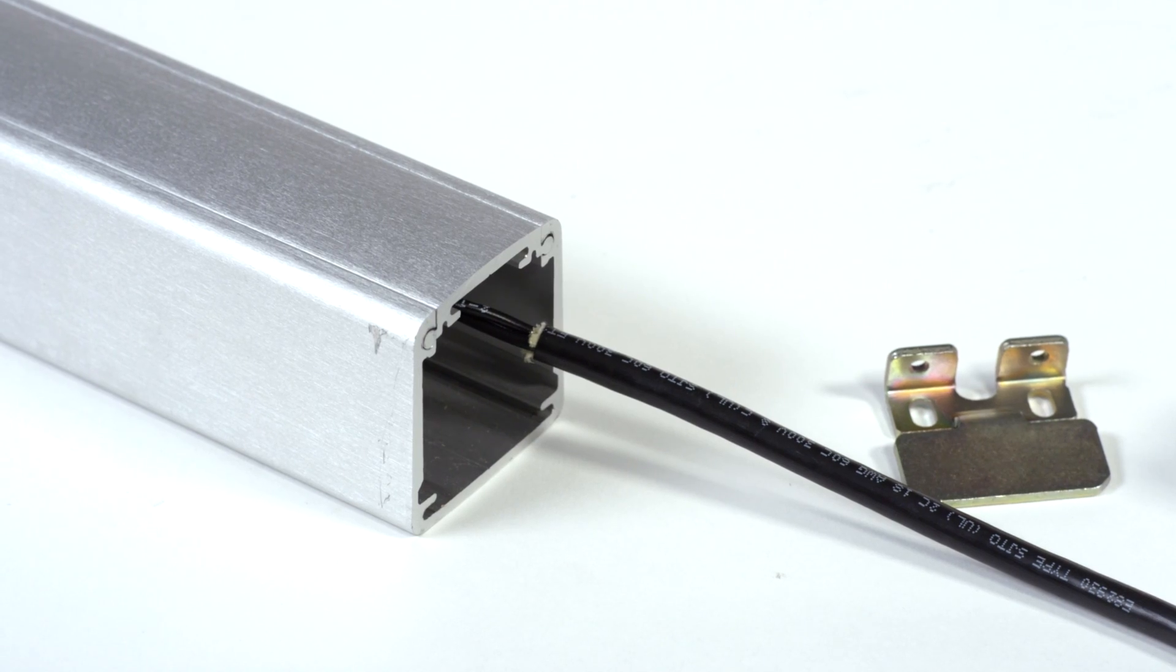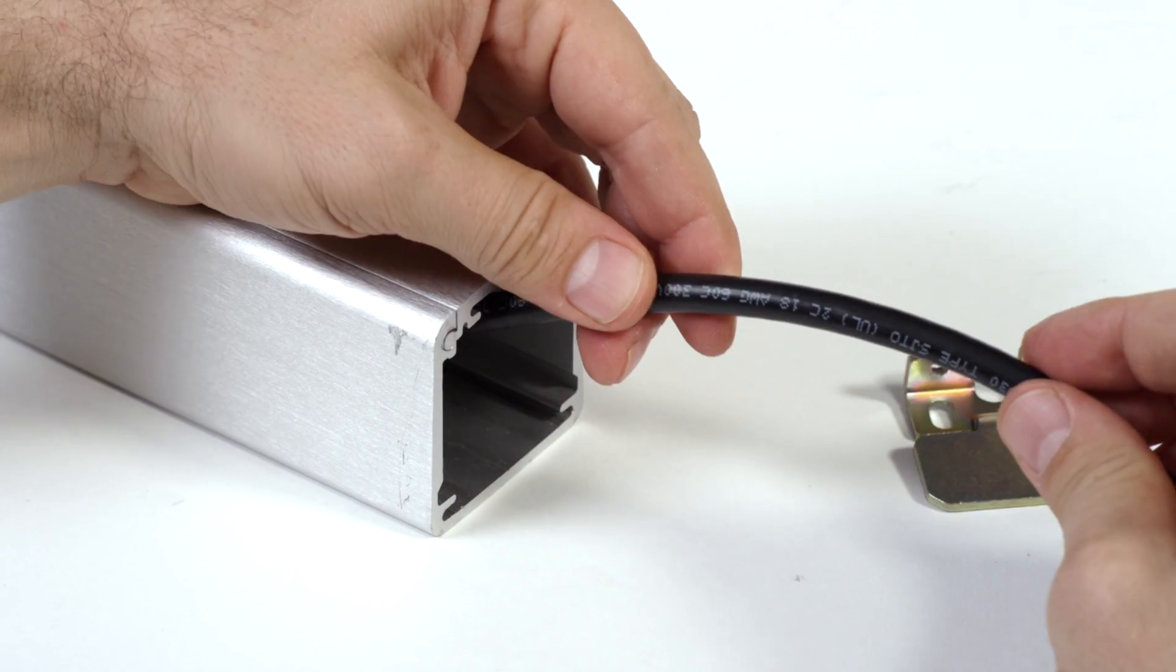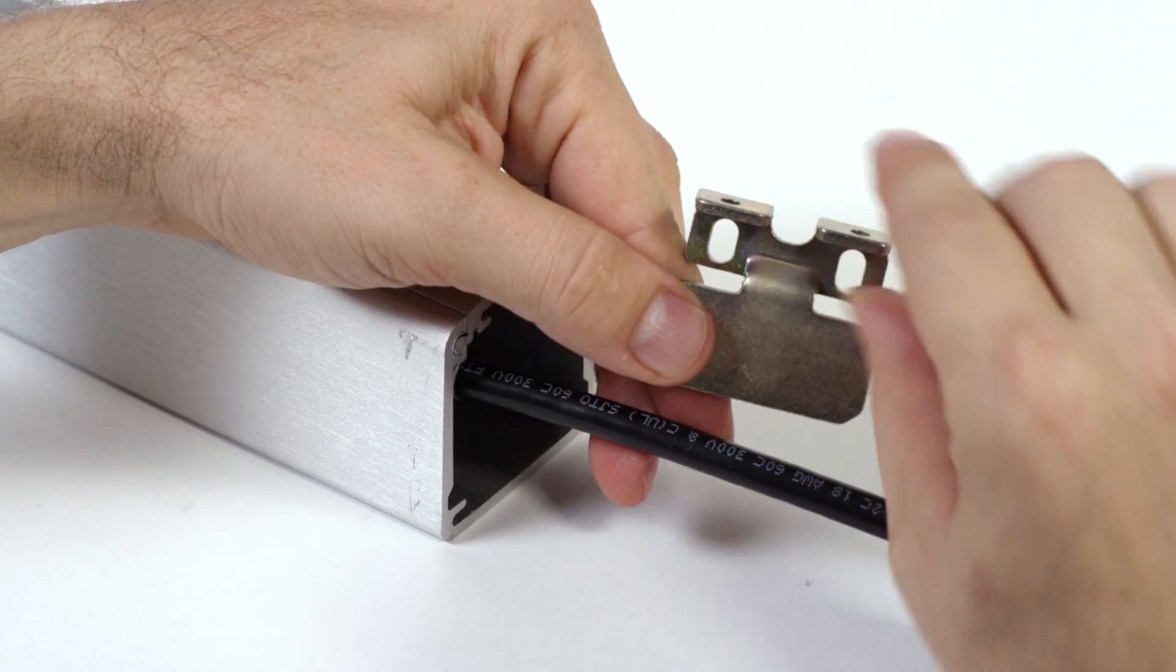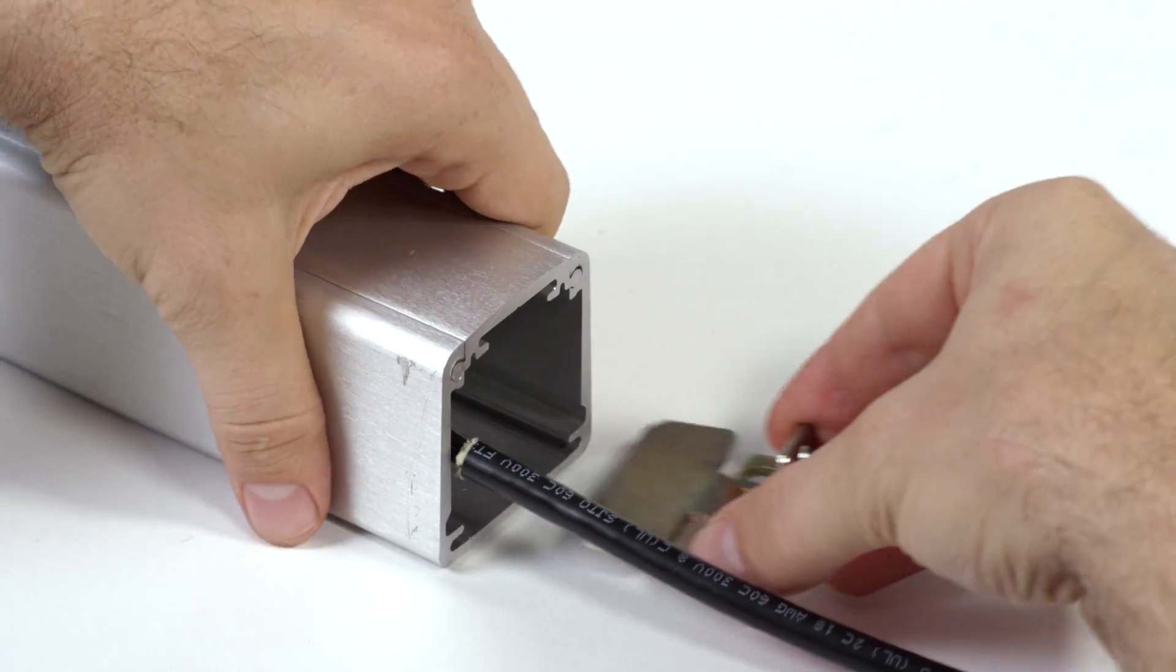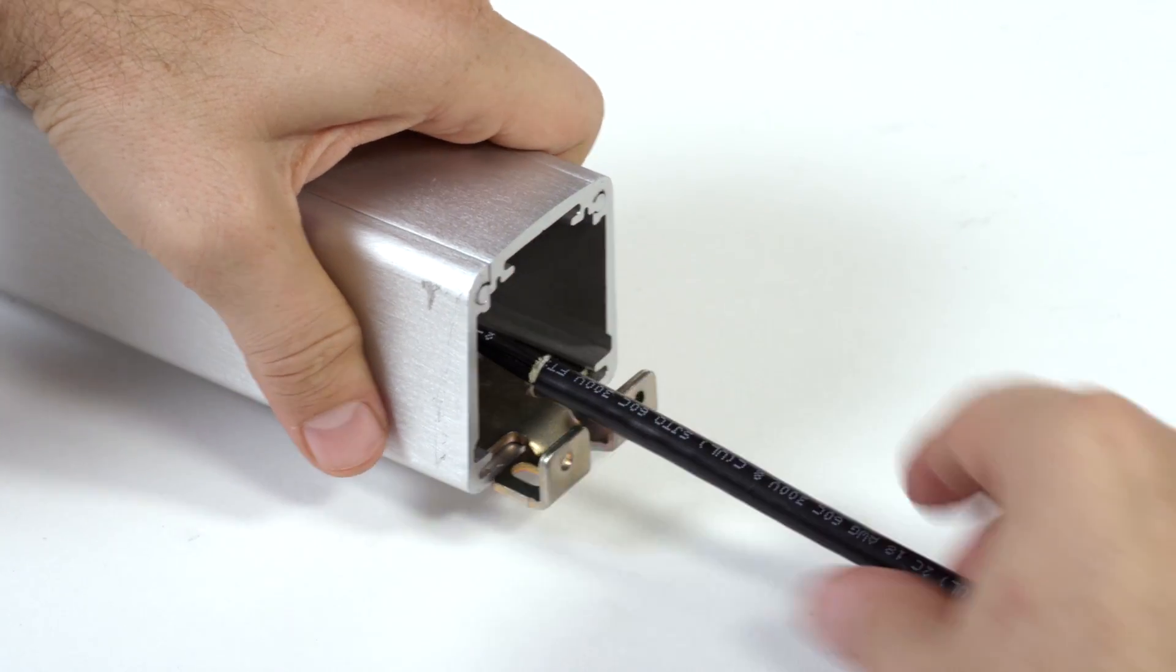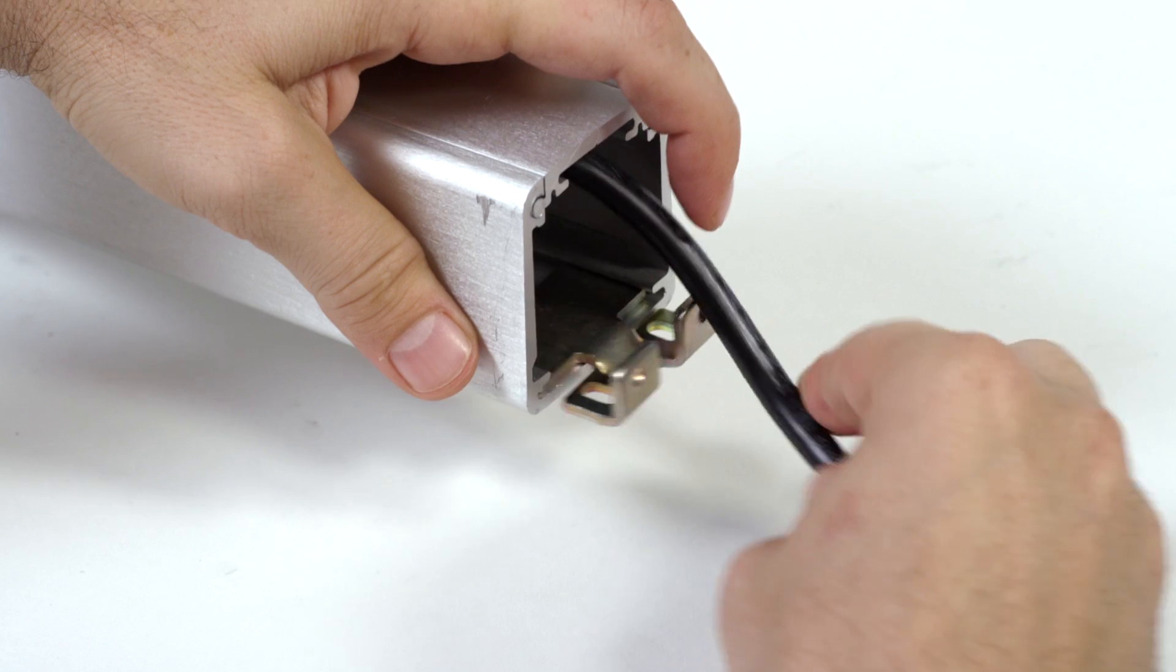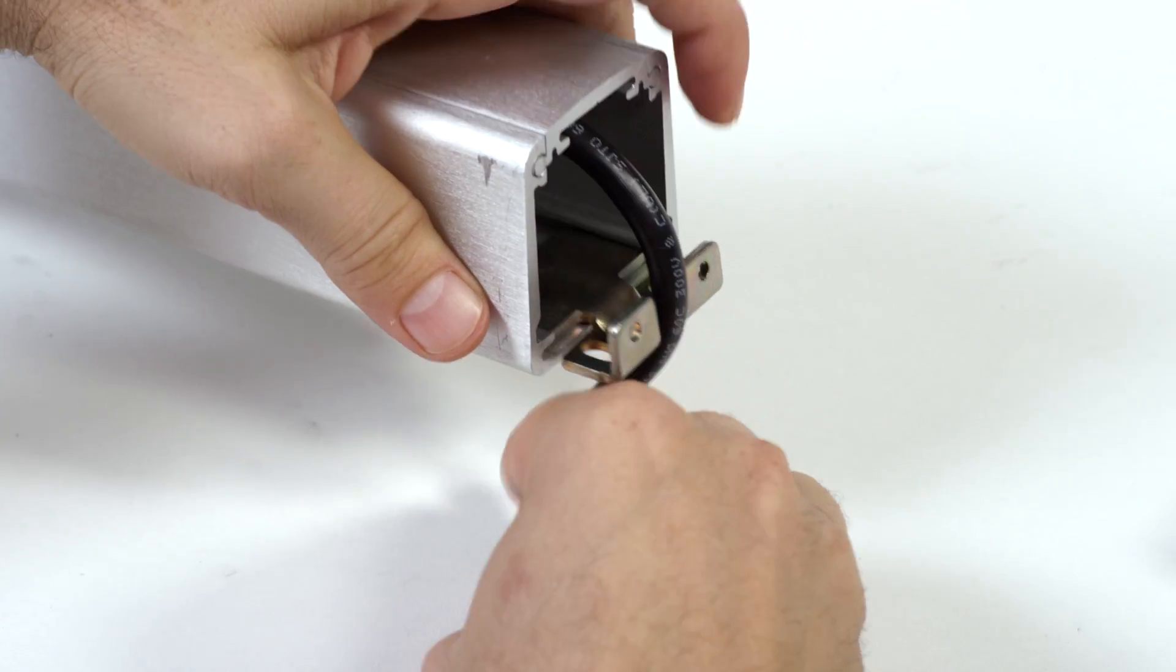The power cable will exit this end of the device and go through the retaining bracket using the space provided. The bracket slides into the bottom groove. You can see how the cable will exit the exit device and enter the door. An extra hole has to be provided for this step.